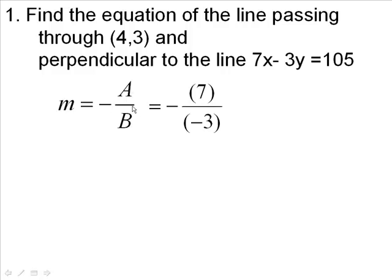We want the opposite of a over b, so we want the opposite of this minus. So the slope of this line is going to be 7 thirds, because the opposite of a minus is a plus.